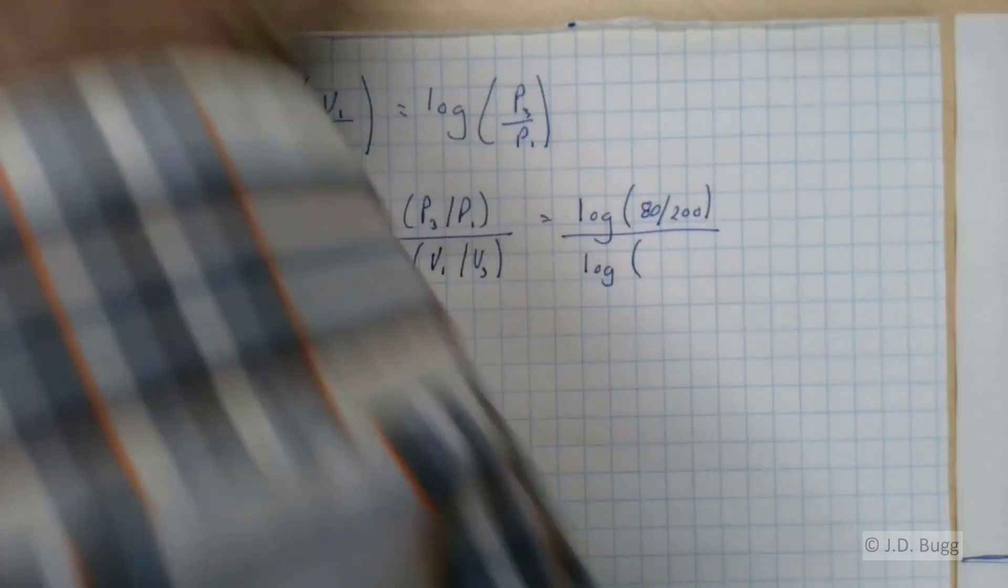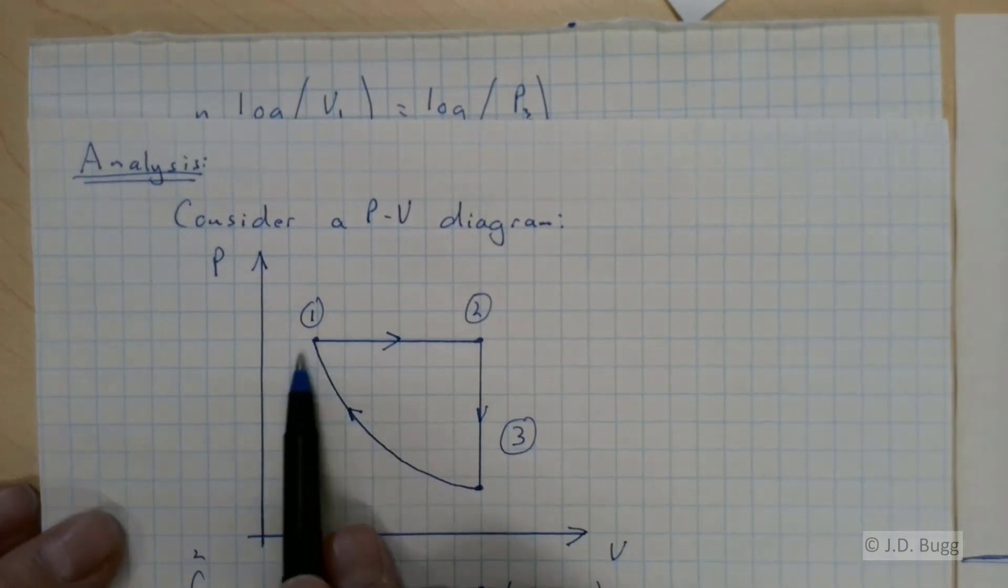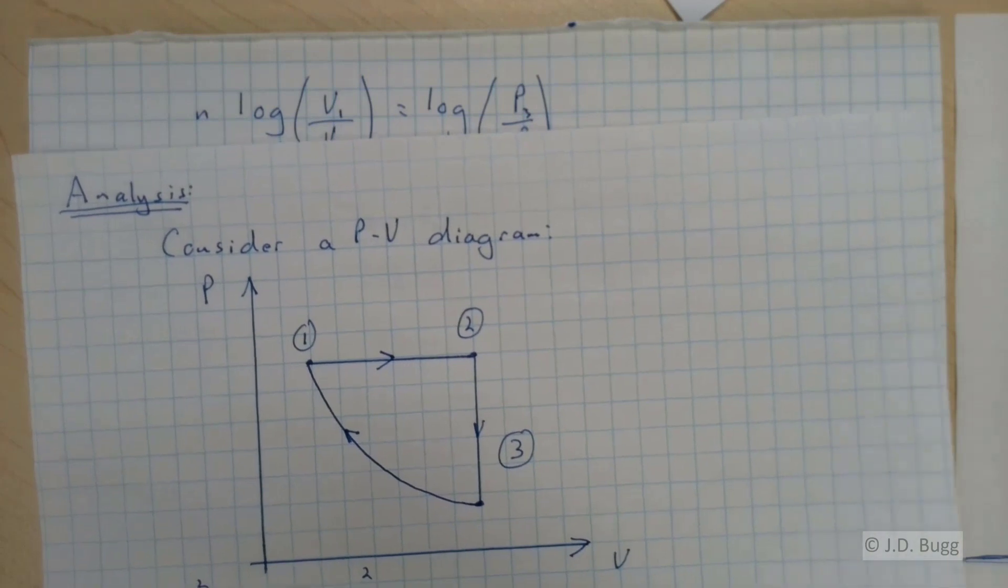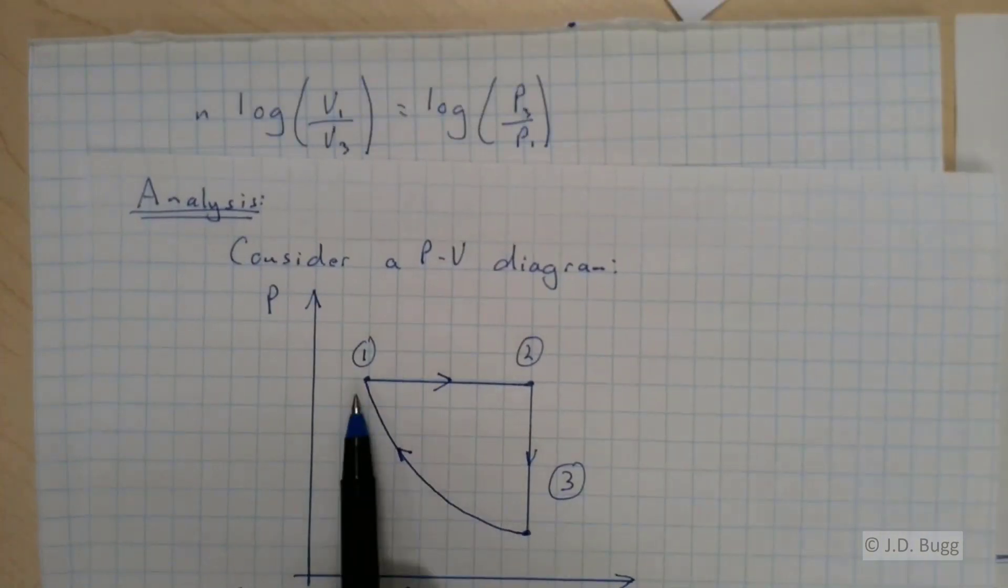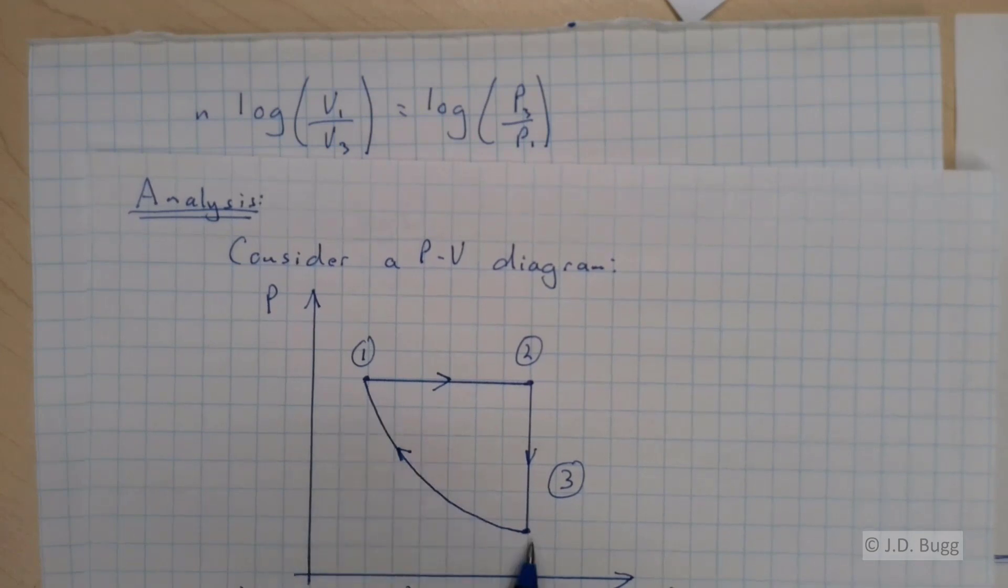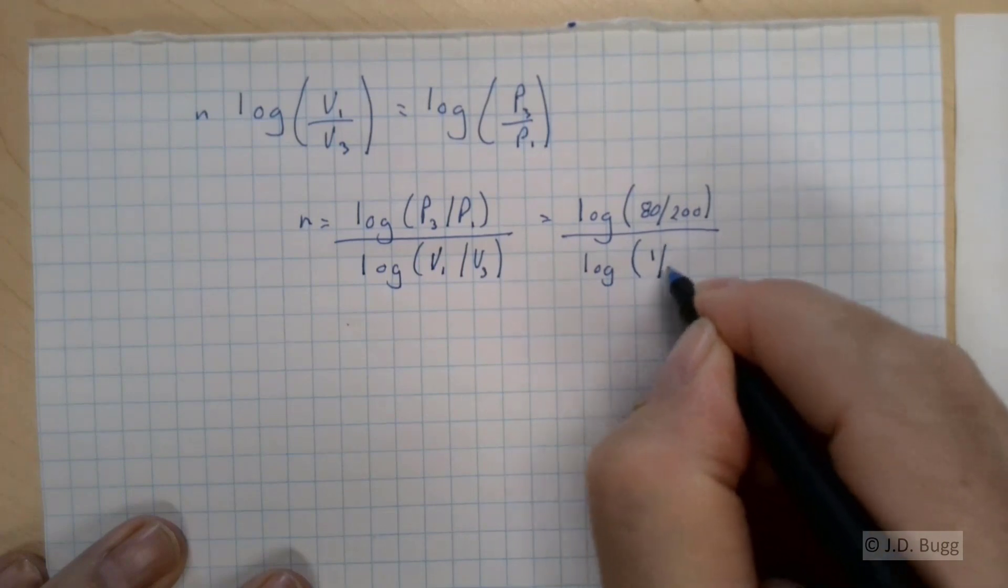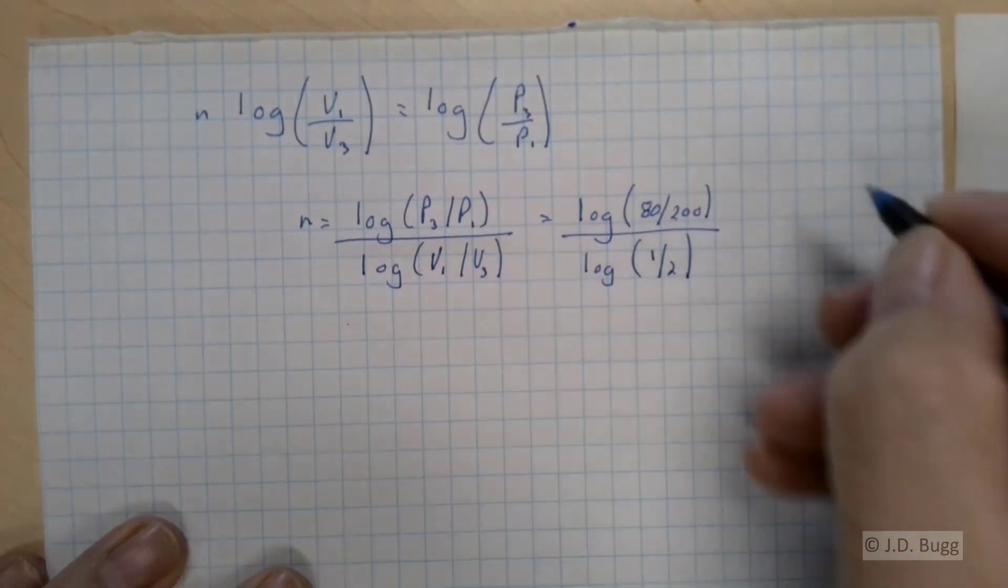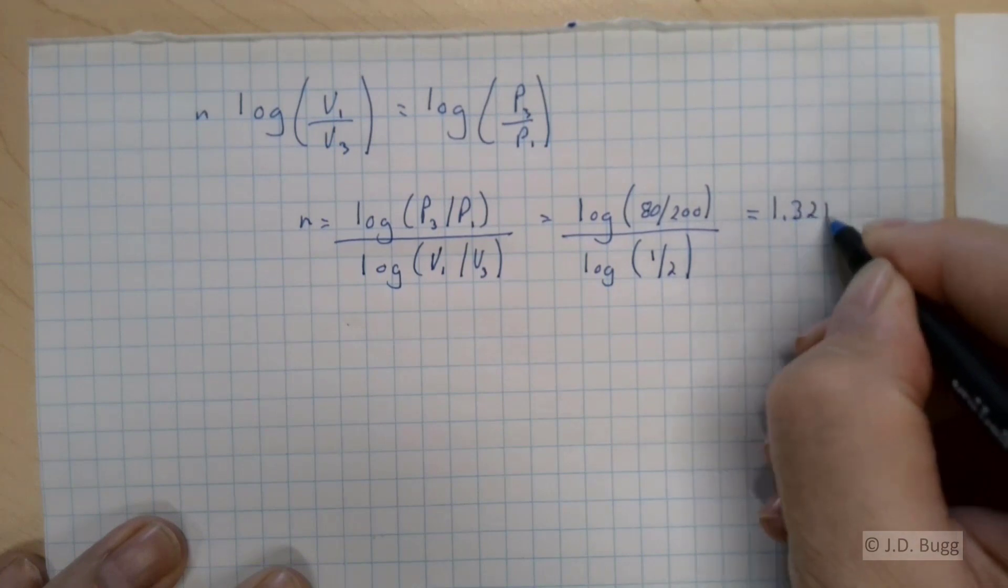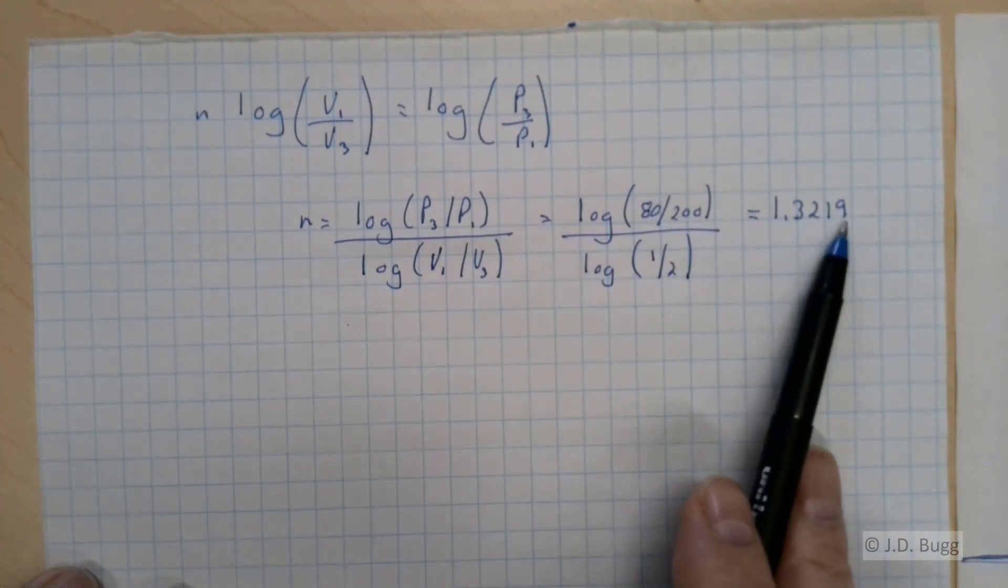Divided by the log. So V1 over V3, if we go back to our diagram here, V1 over V3 is 1 over 2, because we're told during this process the volume doubles. So V1 over V3 is 1 over 2. So we calculate this out and we get 1.3219. So our polytropic index is 1.3219.